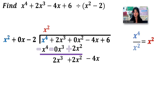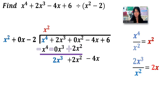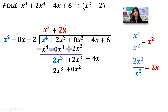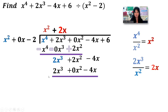Bring that minus 4x down and we're ready to start again. What's in front over what's in front: 2x cubed over x squared simplifies to 2x, so that goes right there. Multiply 2x times each term: 2x cubed, 0x squared, negative 4x. Draw my line and subtract — running the negative all the way through, we have minus 2x cubed, that positive becomes negative, then becomes a positive, plus 4x. Combine: 2x cubed minus 2x cubed is nothing. 2x squared minus 0x squared is 2x squared. Negative 4x and 4x — we don't have any x's.